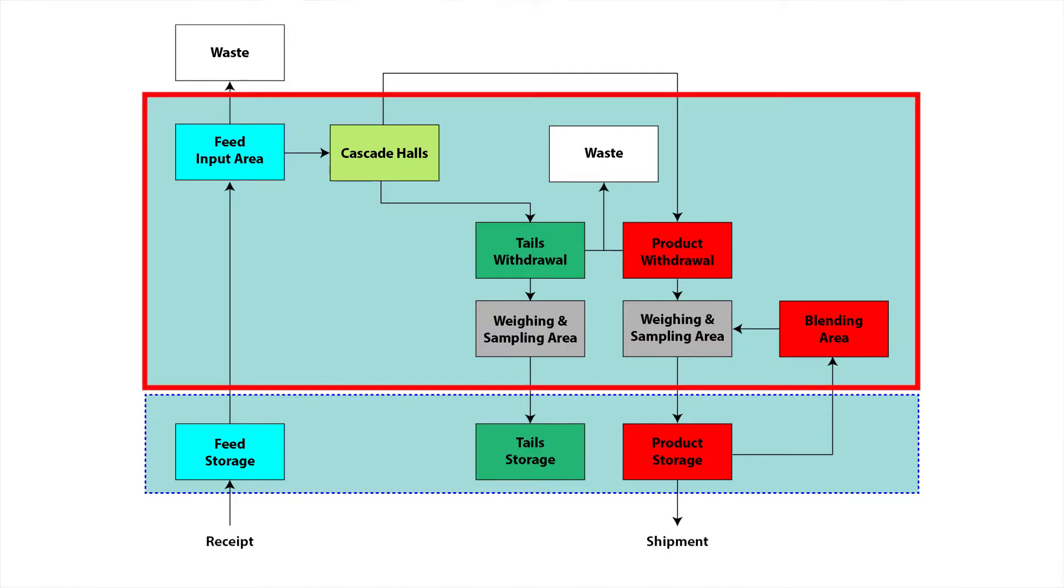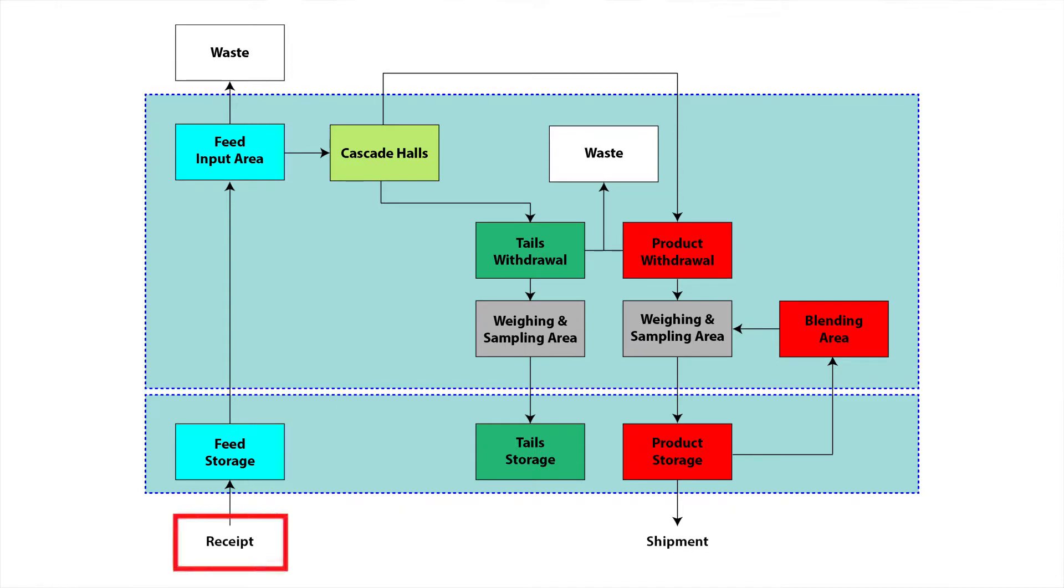The second material balance area covers the process areas, which includes the cascade halls. Since we are weighing and possibly analyzing the concentration of the material at the point at which it is received, we will place a key measurement point, or KMP, at this point, before it enters the storage area.